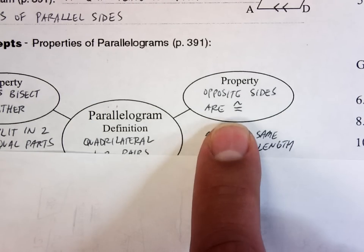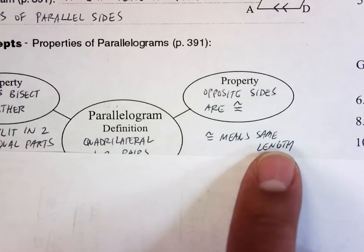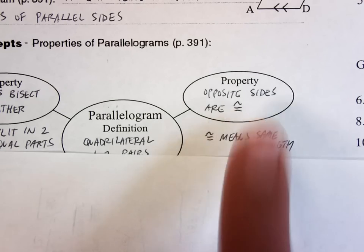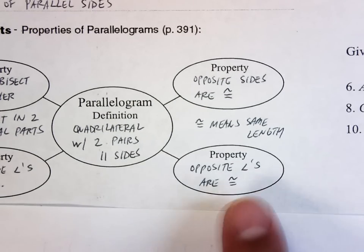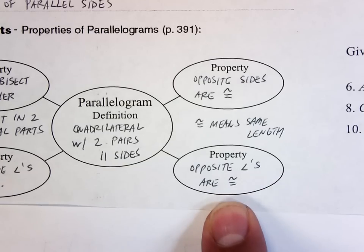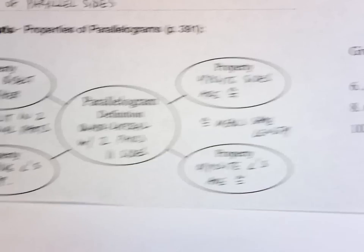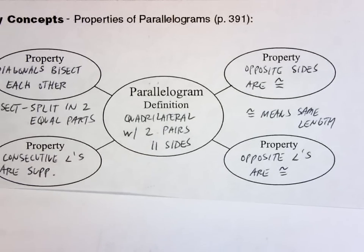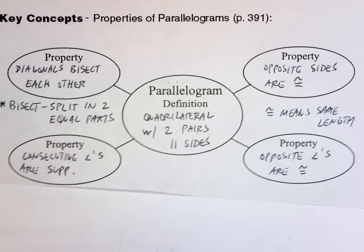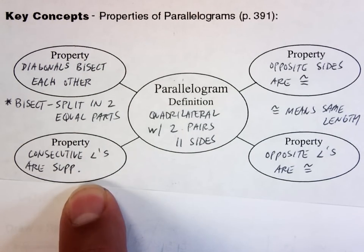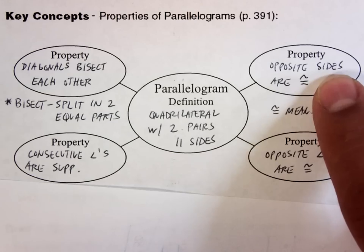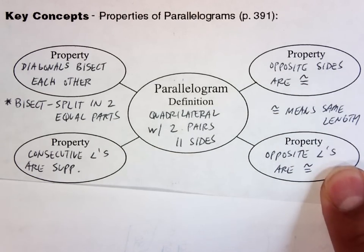Opposite sides of a parallelogram are congruent. If we forget, congruent just means that they are the same length. Opposite sides of a parallelogram are congruent, they have the same length. And opposite angles are congruent. So there's my little picture. If you're struggling to write it all down, pause it right there. I've got it all on the screen. Diagonals bisect each other, consecutive angles are supplementary, opposite sides are congruent, opposite angles are also congruent.